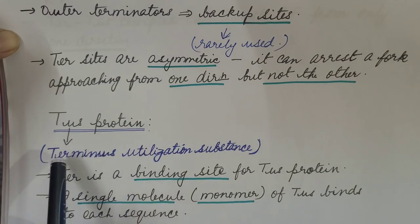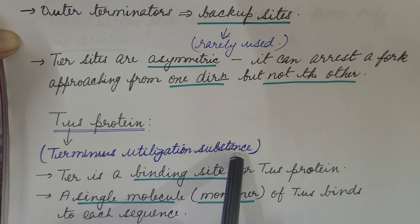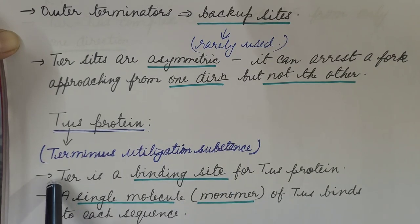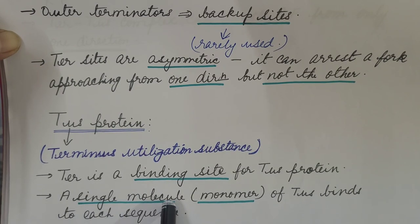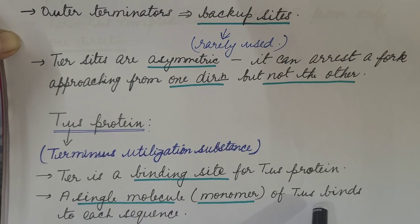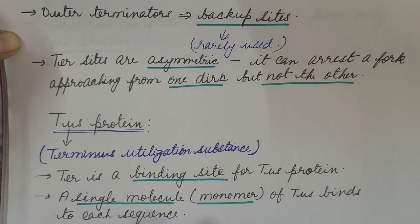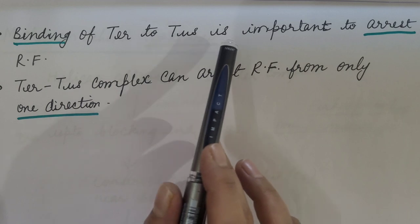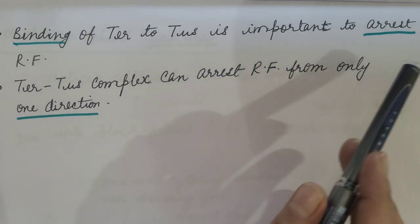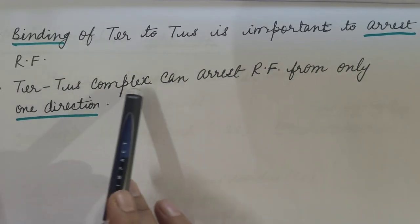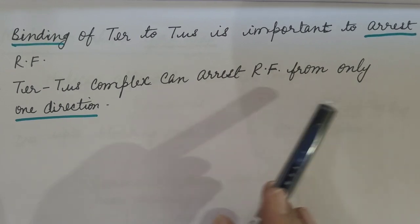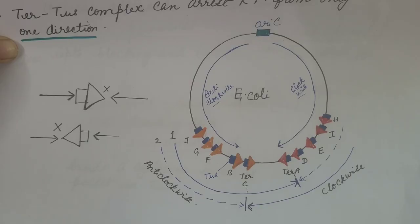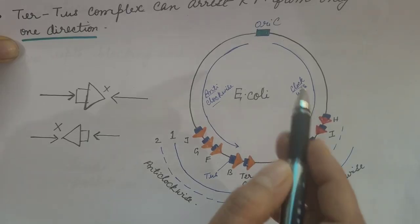Now the TUS protein — it is the terminus utilization substance protein. Ter site is a binding site for TUS protein. A single molecule, i.e., a monomer of TUS, binds to each ter sequence, and this binding of TUS to TER is important to arrest the replication fork. The TER-TUS complex can arrest the replication fork from only one direction.